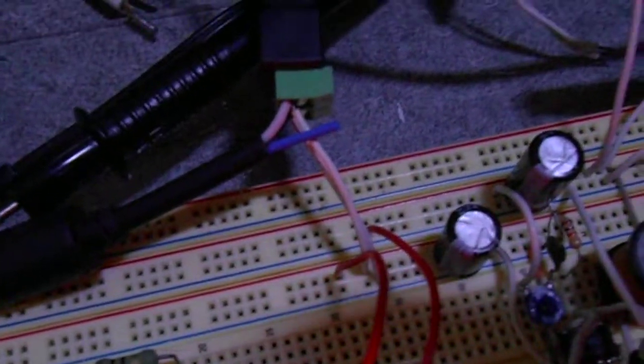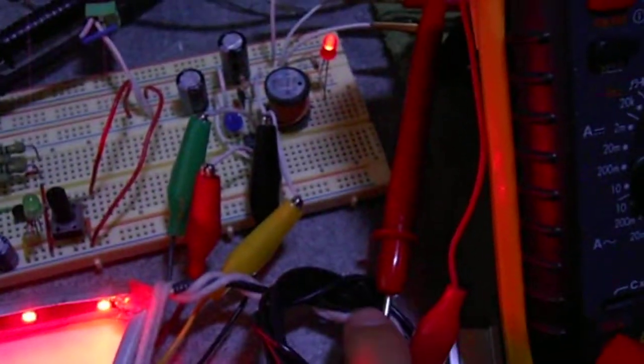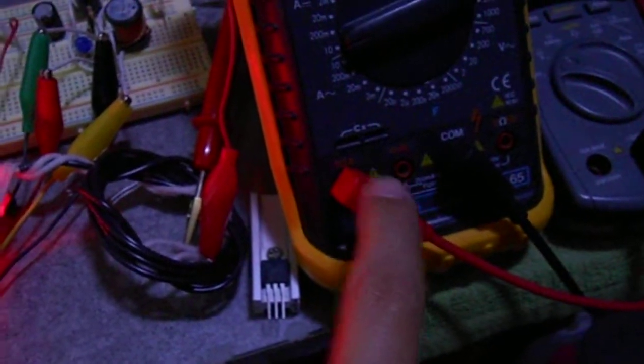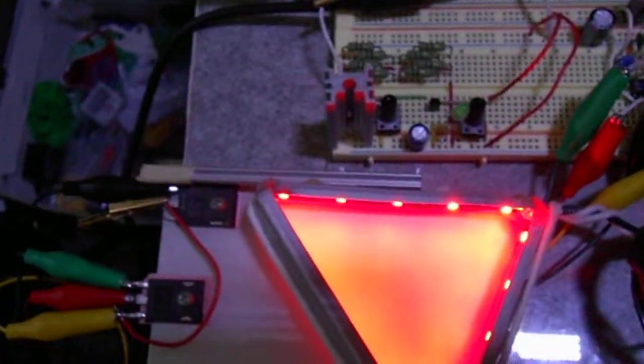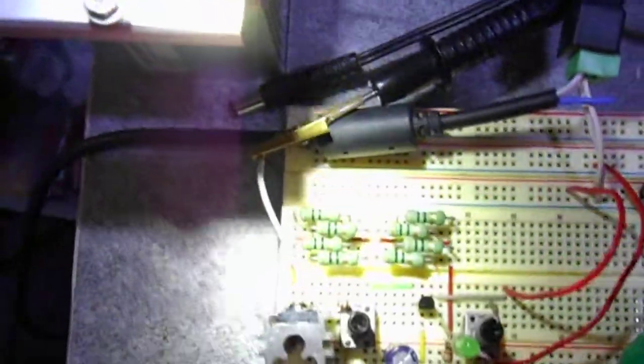And yeah, the output of that is going here to the red wire, which connects to this. And this goes here, common, back to here, which goes on to this circuit. Turn it. Stupid light. To this circuit back here.